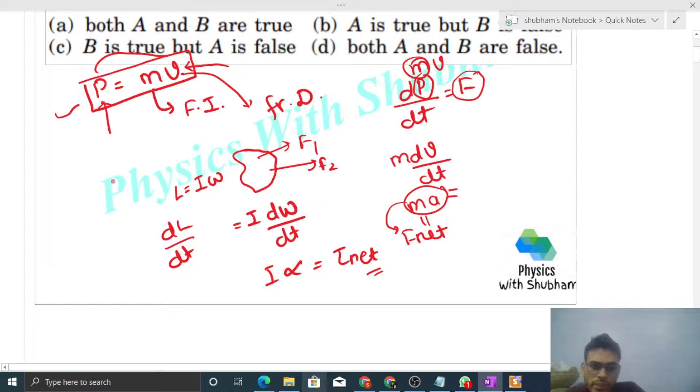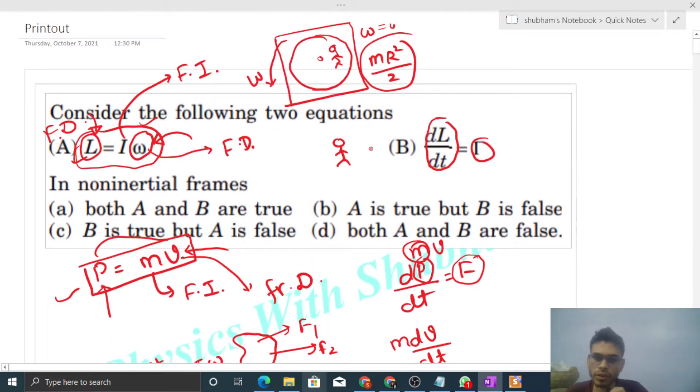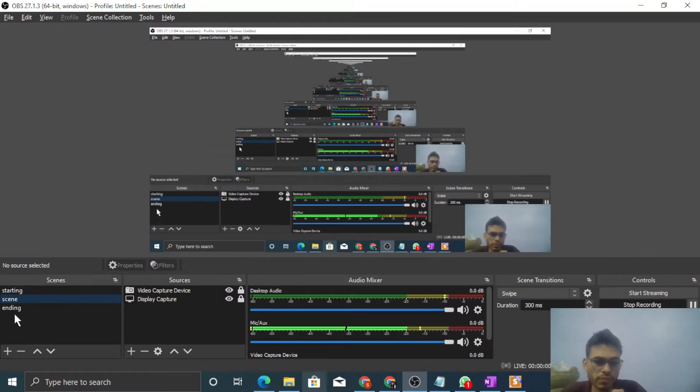Now when we go into non-inertial frame, then pseudo force also comes, pseudo force's torque also comes. But from inertial frame pseudo force is not visible. So its torque is not visible. So net torque will change. So we cannot write dL by dt equal to just torque. You have to find net torque. And net torque depends on frame because of the presence of pseudo force. So this equation is not correct. Here it should be net torque. Option B is wrong, option A is correct. So I think you have understood. Let me know if you still have any confusion, we can discuss further. Okay guys, keep working hard. Best of luck. Bye.